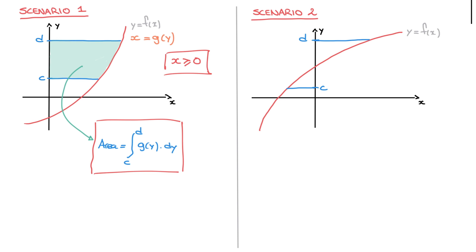That would correspond to the sum of this area on the left-hand side of the y-axis and this area on the right-hand side of the y-axis. I'll shade the area on the right-hand side in the same green as before, and the area on the left-hand side in orange. Notice that these two areas are split at a point on the y-axis, and I'll say that the y-coordinate there is k. To find the total area, we start by writing the curve's equation as x equals to g of y.